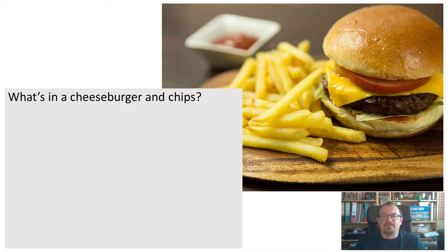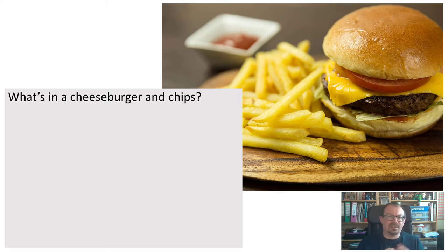So let's think about a cheeseburger and chips. What different food groups do you think there would be in that meal? Can you think about all the different parts — the burger, the filling, the chips, the bun, the sauce? Write down what you think or talk to somebody nearby about it. Pause the video if you want while you do it and then play it again when you're ready to carry on.